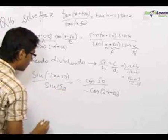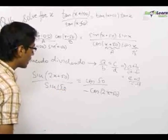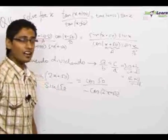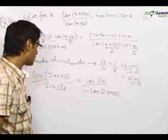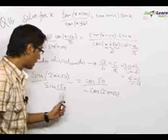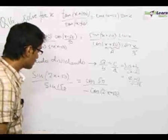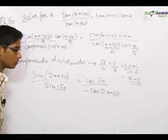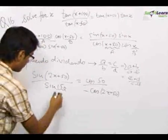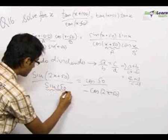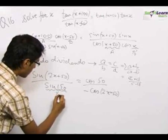Now, sin(150°) equals sin(π - 30°), and since sin(π - θ) equals sin(θ), sin(150°) becomes sin(30°) which equals one half. So the value of sin(150°) is one half.